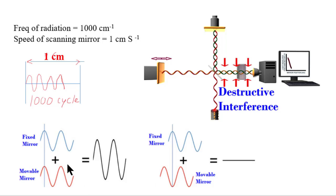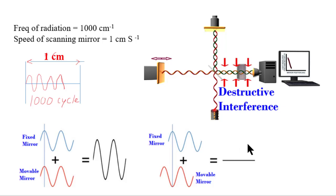From the constructive and destructive interference explanation, we have seen that if we move the scanning mirror a distance of half a wavelength from a constructive interference position, we get destructive interference. At constructive interference we get maximum intensity, and at destructive interference we get zero intensity. If the scanning mirror is moved again another half lambda, we get constructive interference again. So: high intensity, then zero, then after another half lambda, constructive interference again — giving a complete cycle at the detector. Therefore, for a movement of the scanning mirror equal to a distance of lambda, we get a single sinusoidal wave cycle at the detector.